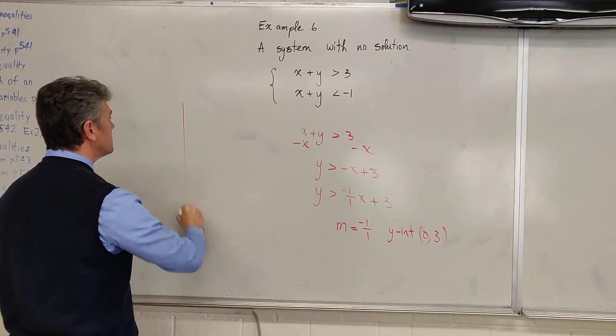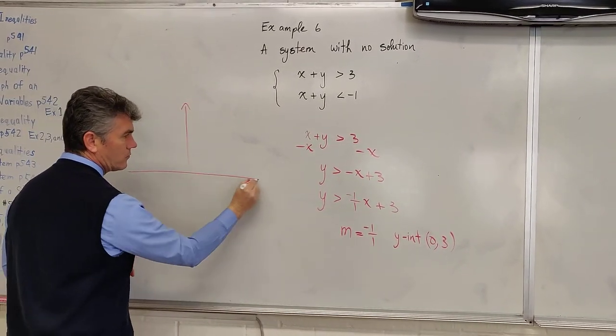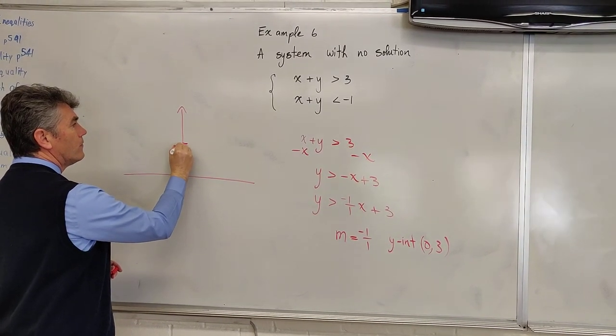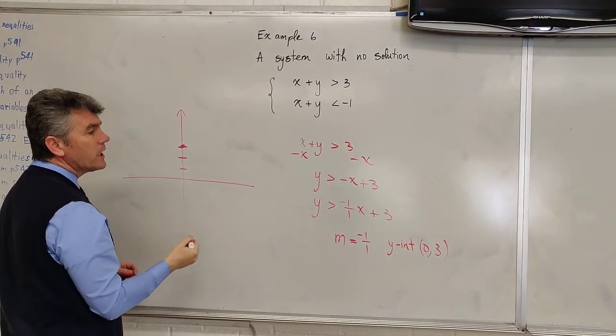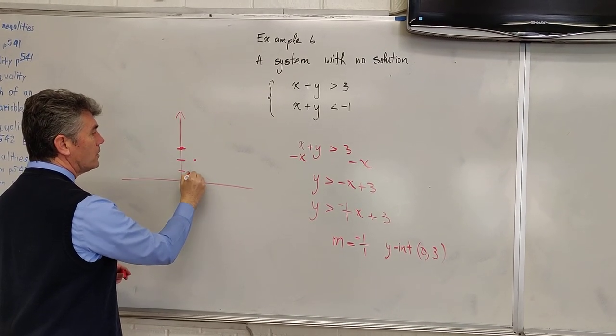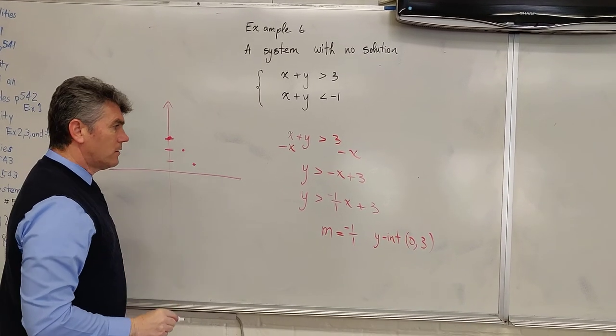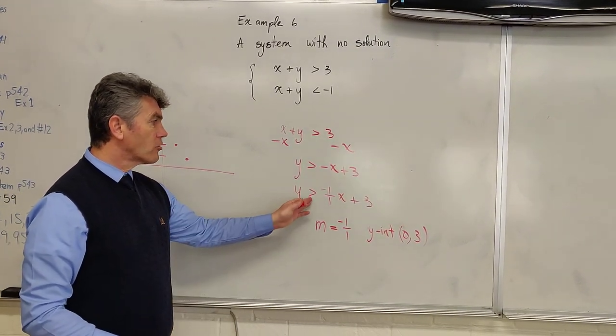We draw the y-axis. We start at the point 0 comma 3. Then from there, go one unit down, one to the right, one unit down, one to the right. That's good enough. Let's see what we've got. We have greater than.